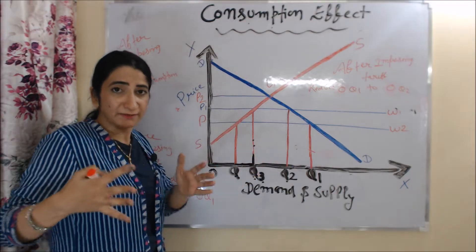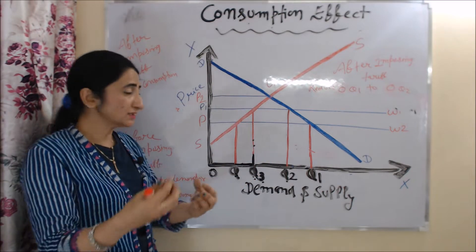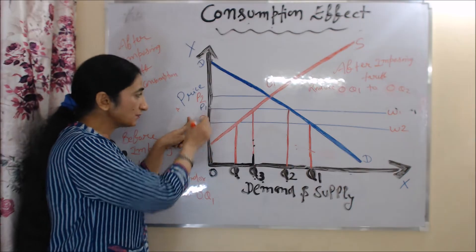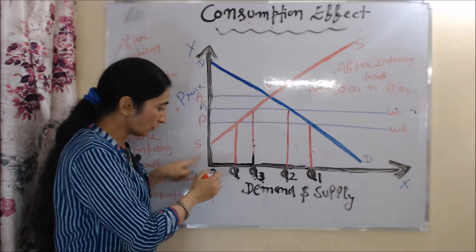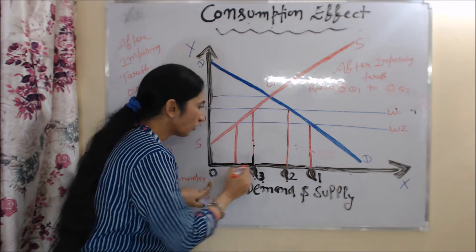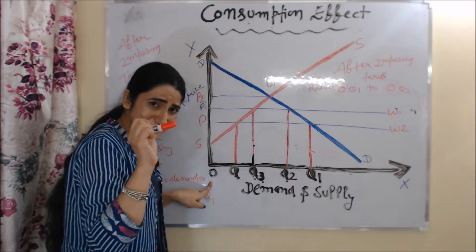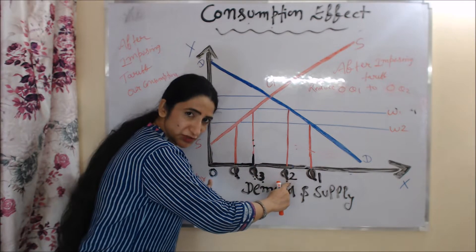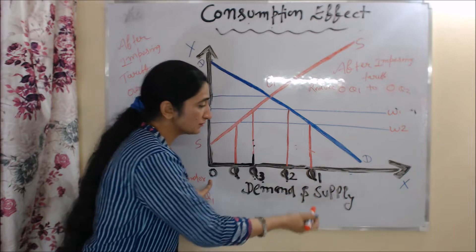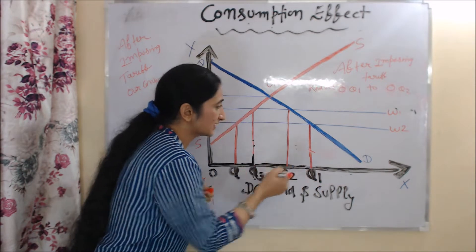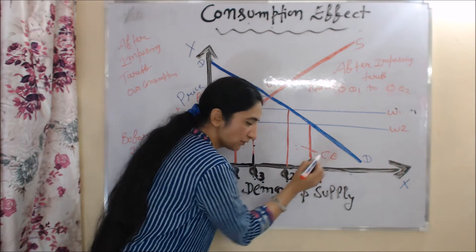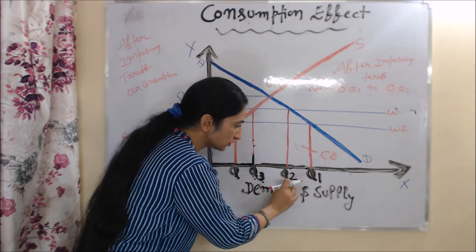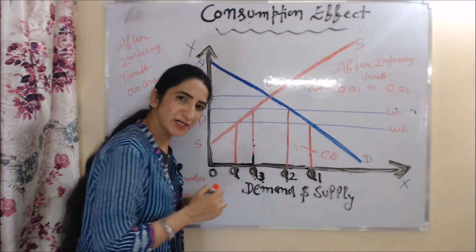But when tariff is imposed, the price of goods increases — now we have OP1 price. At OP1 price, our consumption falls from OQ1 to OQ2, meaning after imposing tariff we have only OQ2 consumption. This fall in consumption from Q1 to Q2 is basically called the consumption effect.